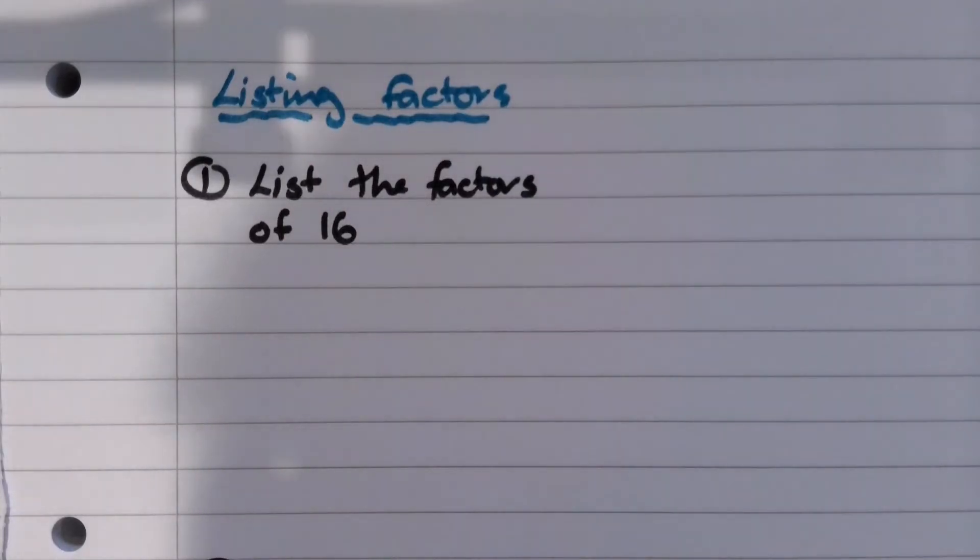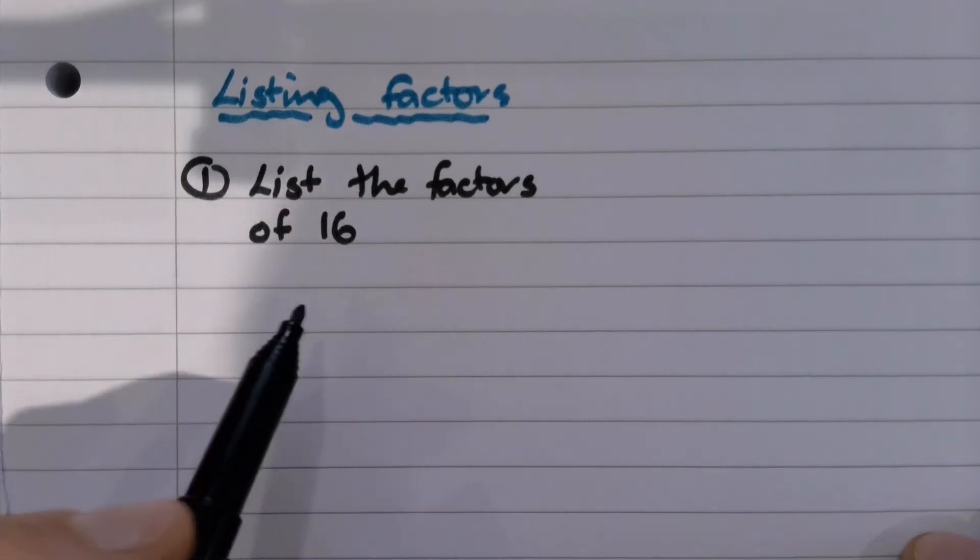Hi, today we're going to go through listing factors and we're going to do this with factor bugs. So the question is, list the factors of 16.